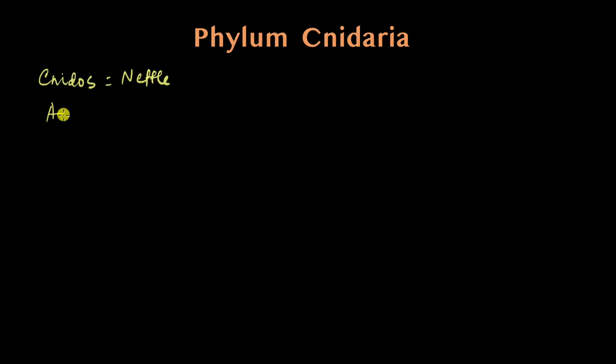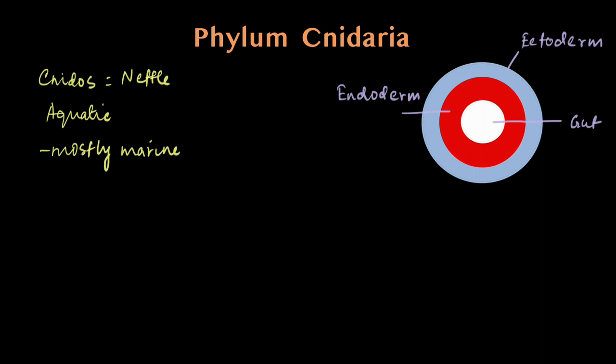Where are they found? They are all aquatic and mostly found in oceans and seas, so they are mostly marine. They are diploblastic, which means they have two layers of tissue when they are embryos.